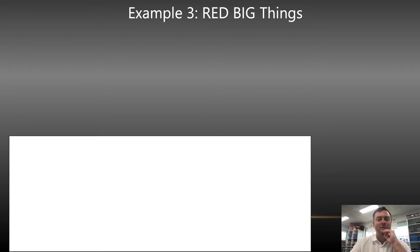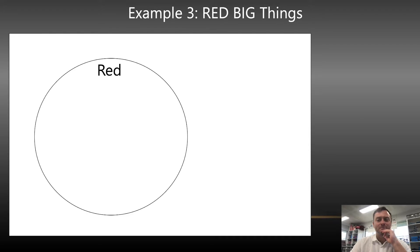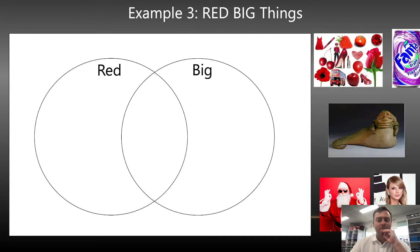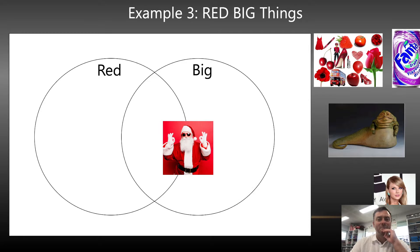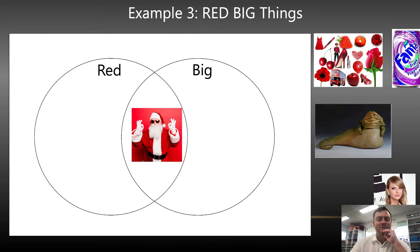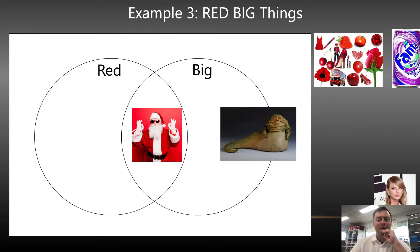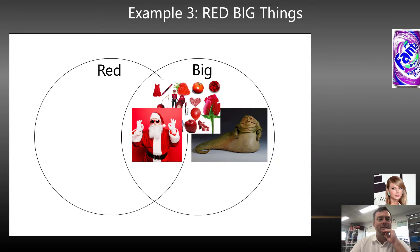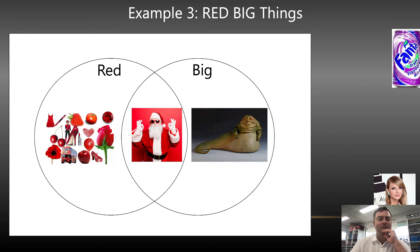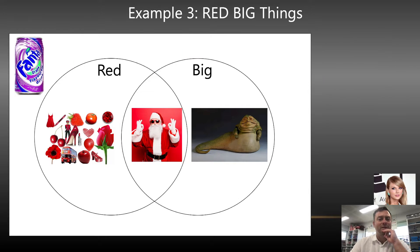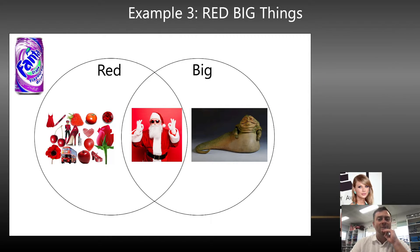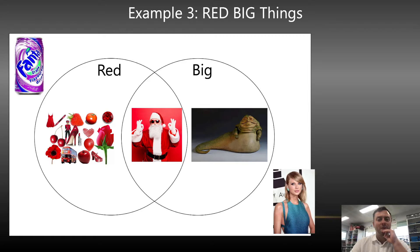Then I did one with red and big things. So if you've got Santa, he's red and big. You've got Jabba the Hutt — he's just big but he's not red. If you've got things that are red, you would have that. And then if you've got things that are not red and not big, you would have Fanta and Tay Tay on the edge.